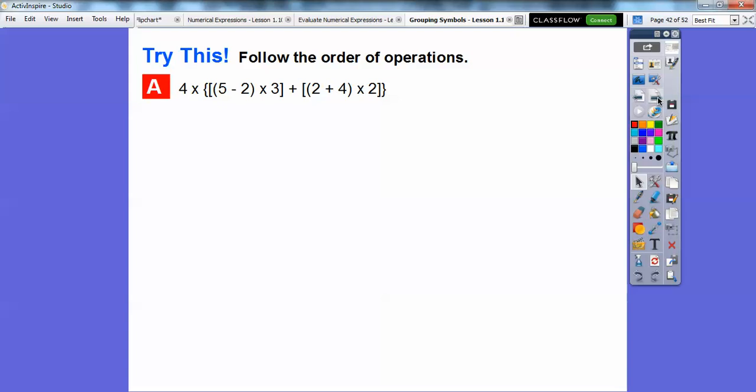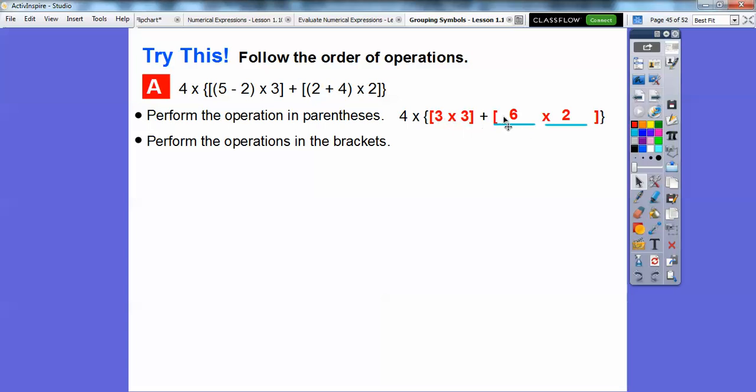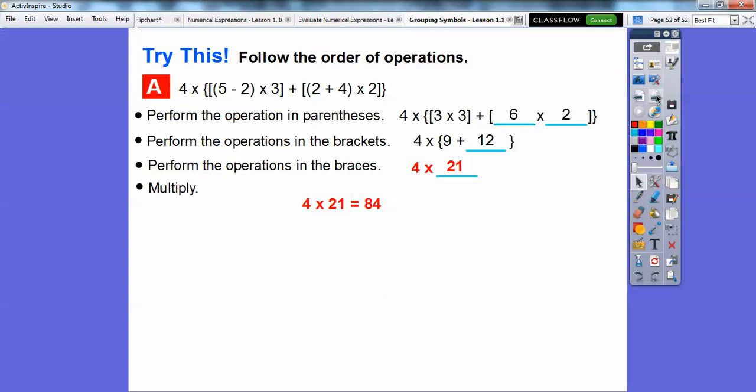Let's try this, you guys. Follow the order of operations here. So we have brackets, parentheses, we have braces. Here's the braces right here. So let's go through step by step. Let's perform in the parentheses first. So this 5 minus 2 is this 3 right here. And then we're going to do this 2 plus 4 is going to get a 6 right here. And then let's go ahead and perform the brackets next. So we're going to do 3 times 3 and 6 times 2 right here inside the brackets. 3 times 3 is 9. 6 times 2 is 12. Then we're going to now do the braces. So now we're going to do the 9 plus 12 right here inside the braces. 9 plus 12 is 21. So now we can finally multiply. So 4 times 21 equals 84.